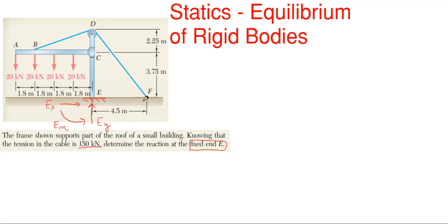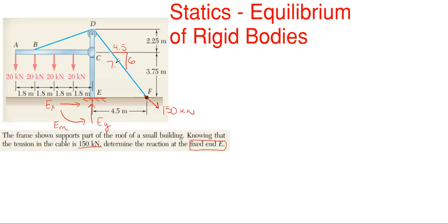The cable has 150 kilonewtons of tension pulling in that direction. I'll place it at point F where it connects to the ground. Since it's at an angle, we need to determine the dimension triangle. From D to F, the horizontal distance is 4.5 meters and the vertical is 2.25 plus 3.75, giving 6 meters. Taking the square root of 4.5² plus 6² gives a hypotenuse of 7.5 meters.